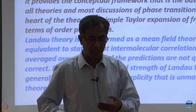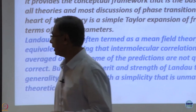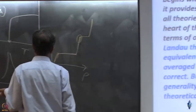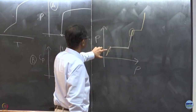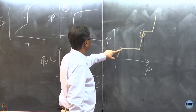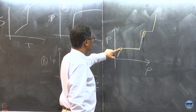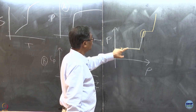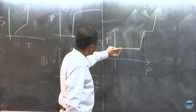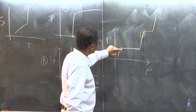One of the new concepts that Landau brings in — he asked the question: how do I take the characteristics of the old phase, which I know contain the key to the phase transition? How do I go about incorporating this?